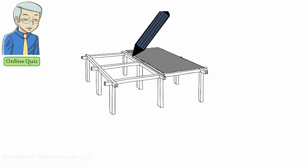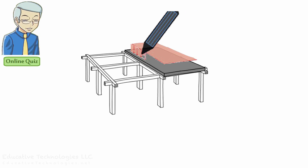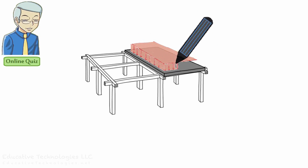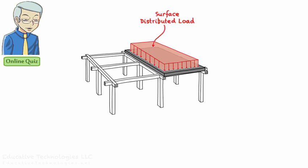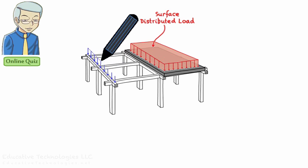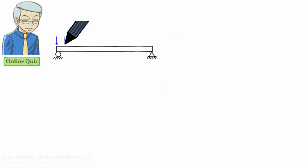A load distributed over a surface, such as a floor system, is considered two-dimensional. A load distributed along the length of a beam is considered one-dimensional. In this lecture, we are going to examine the analysis of beams subjected to various one-dimensional distributed loads. We could have a uniformly distributed load.